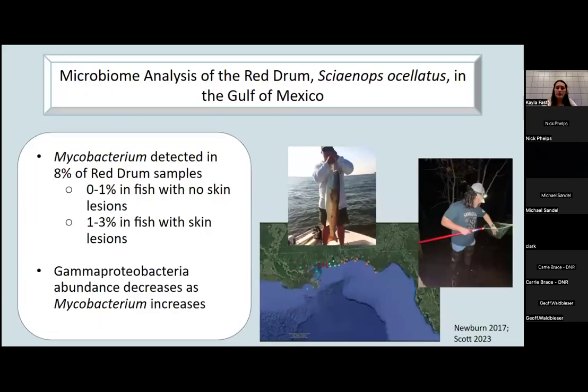So we know that these fish, their microbiome is changing and allowing for increased abundance of mycobacteria. Tyler Newbern was a former grad student in our lab, and Matthew Scott, who you just heard from, they did an analysis of microbiomes of red drum in the Gulf of Mexico. They found that 8% of red drum samples had mycobacterium detected with an increased abundance in fish with skin lesions. They also found evidence of dysbiosis with gamma proteobacteria abundance decreasing when mycobacterium was increased, because gamma proteobacteria tends to be the dominant phylum in fish dermal microbiome. So the fact that we saw that abundance decreasing with mycobacterium increasing shows that there is a change.